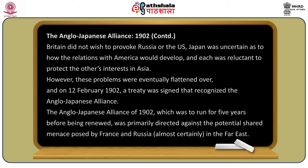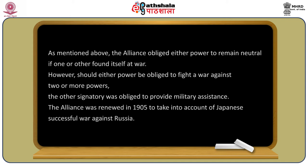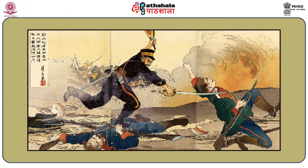The Anglo-Japanese alliance of 1902, set to run for five years before renewal, was primarily directed against the potential shared threat posed by France and Russia, almost certainly in the Far East. The alliance obliged either power to remain neutral if one found itself at war; however, should either power be obliged to fight against two or more powers, the other signatory was obliged to provide military assistance. The alliance was renewed in 1905.